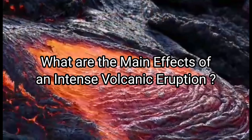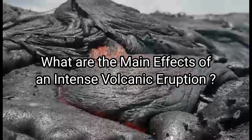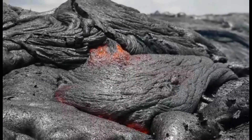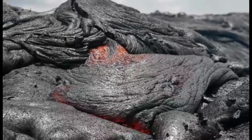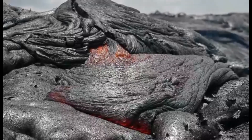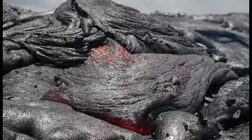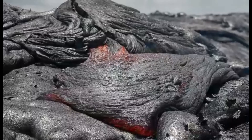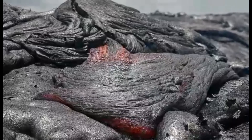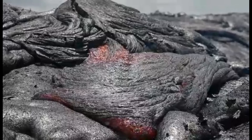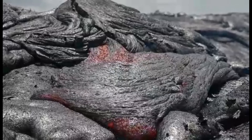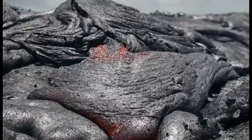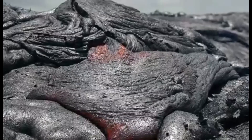Now we will learn about the main effects of intense volcanic eruptions. Volcanic eruptions release hot and dangerous gases, lava, rock, and ash that are very destructive. Such eruptions can cause earthquakes, mudslides, wildfires, and floods. Many people have died from volcanic explosions, and acres of forests and vegetation have been destroyed by volcanic eruptions.